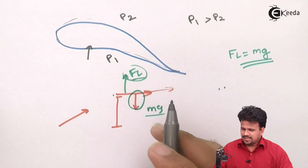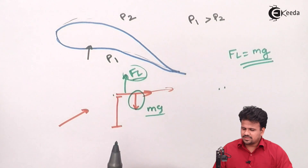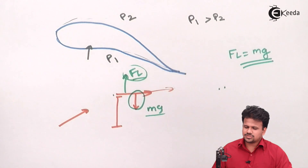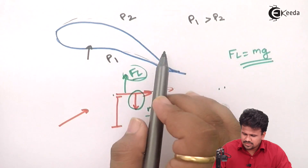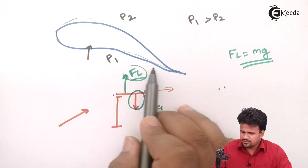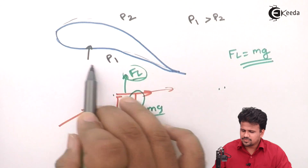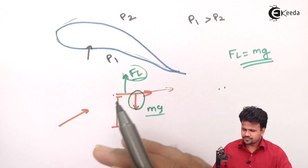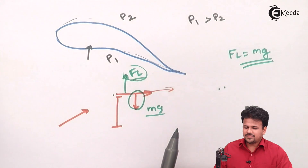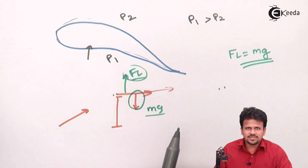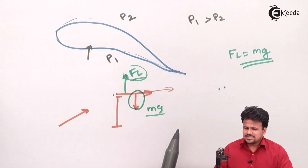If the lift force becomes equal to the weight, then there is a stalling of an aircraft. This profile we considered was an asymmetric profile.